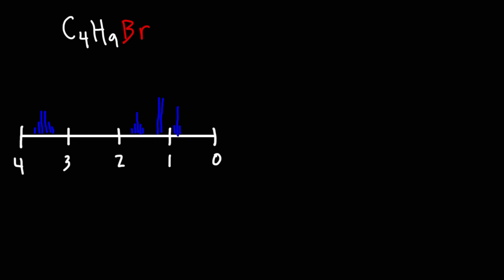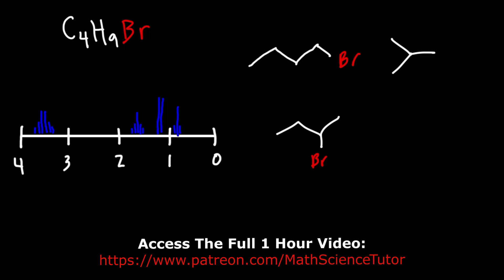Let's draw the constitutional isomers for C4H9Br using line structures. We can place all four carbons in a straight chain and put bromine on carbon one — giving 1-bromobutane — or on carbon two, giving 2-bromobutane. Alternatively, we can use a branched structure with the bromine on the primary carbon or on the tertiary carbon. Those are the four possibilities for C4H9Br.